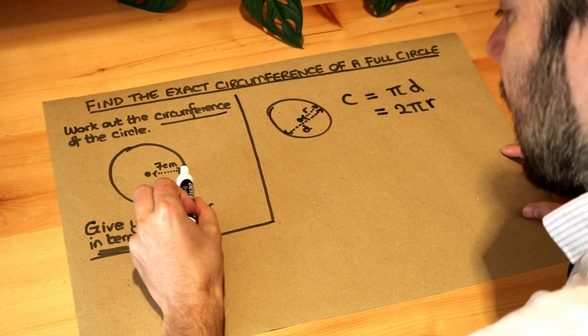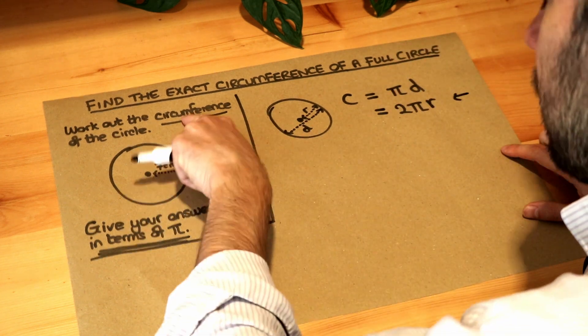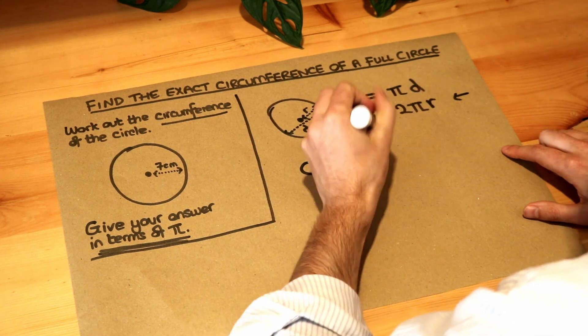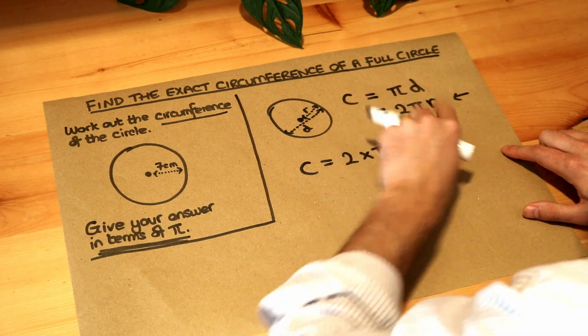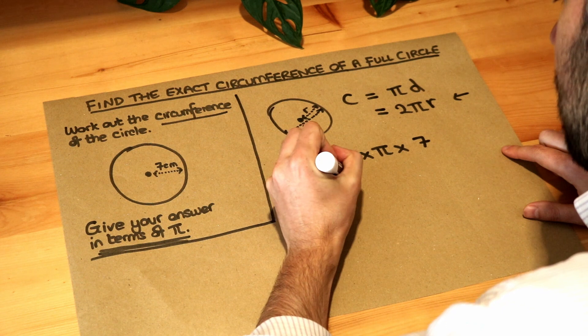Now, in this particular case, we've got the radius. We want to use this formula. So the circumference is going to be two multiplied by pi multiplied by the radius, which is seven. And now we just need to simplify this.